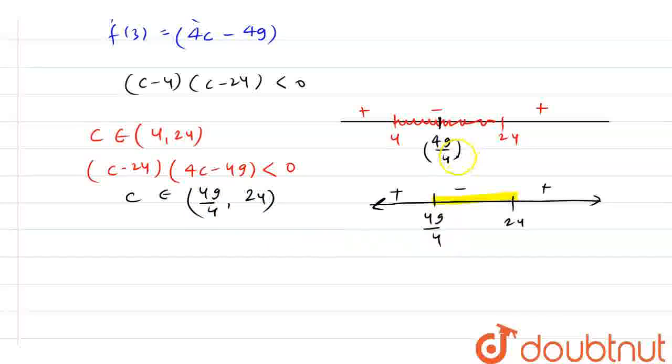Now if I take the common part here, in my first answer we have (4, 24) and in my second we have (49/4, 24). So the common answer is c belongs to (49/4, 24). This is my final answer.